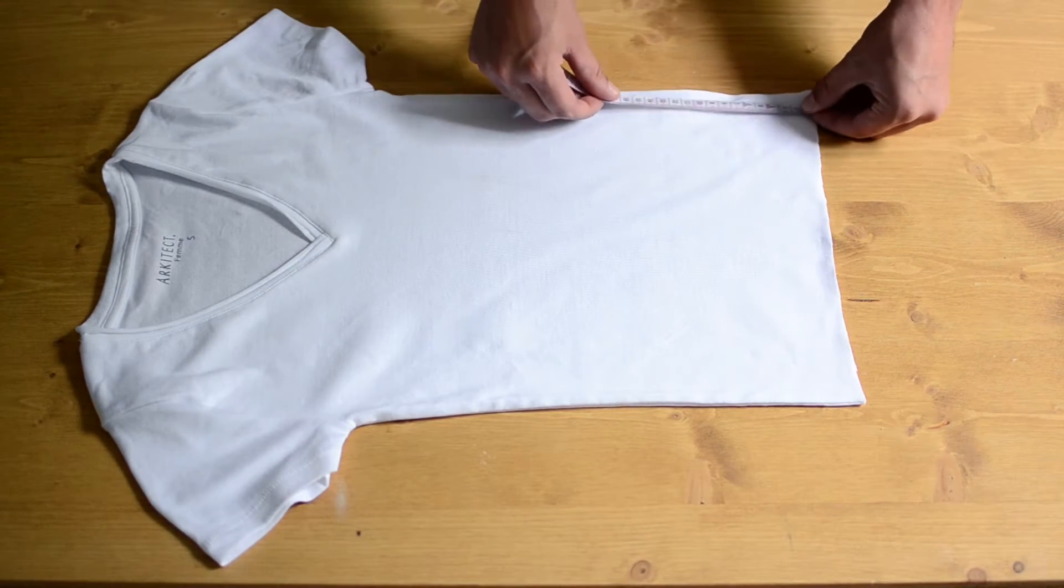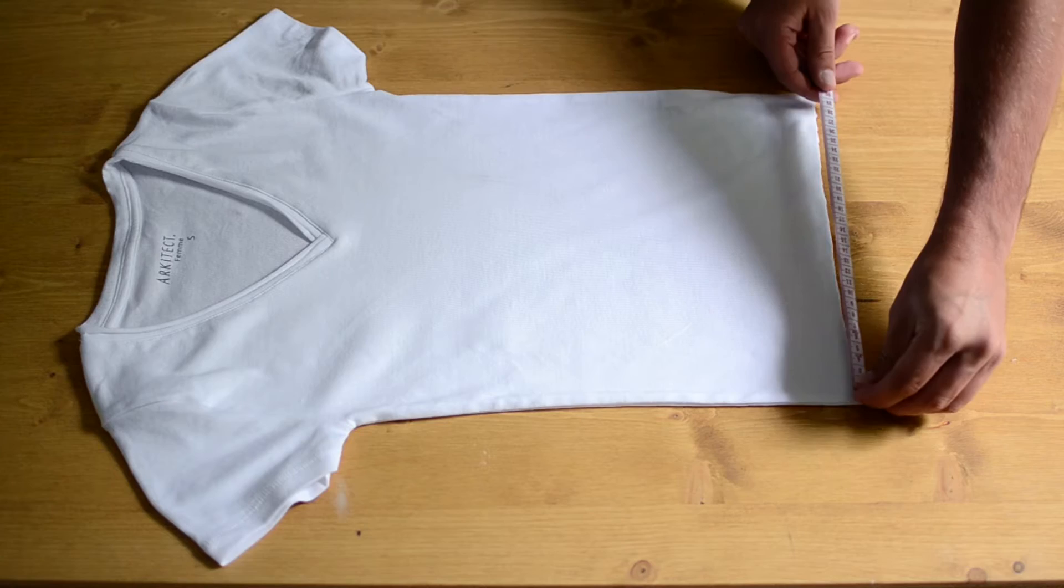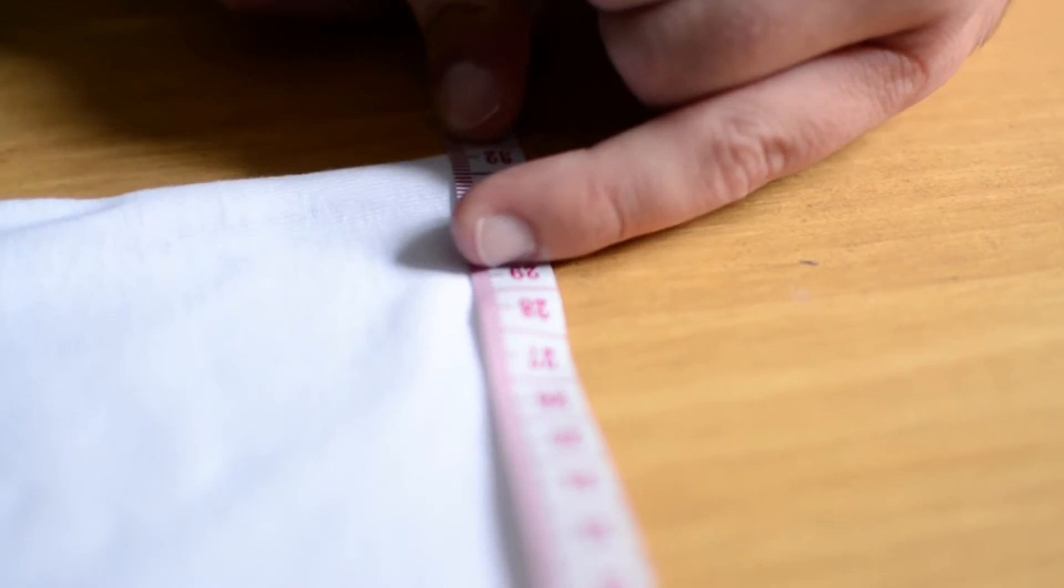Et donc le principe c'est de couper des franges de 20 cm de long et de 1 cm à 1,5 cm de large suivant la largeur que vous désirez.